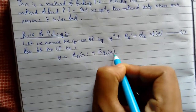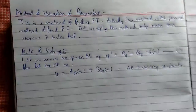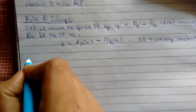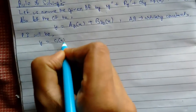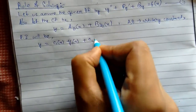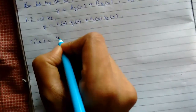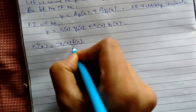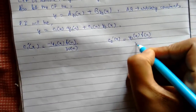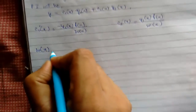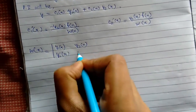The complementary function is Y = A·Y1(x) + B·Y2(x), where A and B are arbitrary constants. Then the PI will be given as PI = C1(x)·Y1(x) + C2(x)·Y2(x), where C1'(x) = -Y2(x)·F(x) / W and C2'(x) = Y1(x)·F(x) / W, where W is the Wronskian determinant: W = |Y1, Y2; Y1', Y2'|.